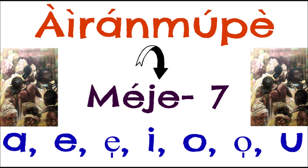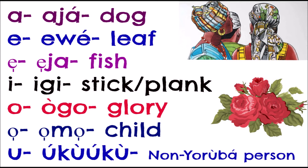We have seven major aeromupe (oral) vowels: A, E, Ẹ, I, O, Ọ, U. 'A' as in 'aja' (dog), 'E' as in 'ewe' (leaf), 'Ẹ' as in 'eja' (fish), 'I' as in 'igi' (wooden plank/stake), 'O' as in 'ogo' (glory), 'Ọ' as in 'omo' (child), and 'U' as in 'uku.'